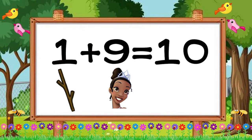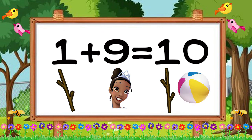Ten. We have number ten. Ten like a stick and a wall. One is a stick and zero is a ball. That's number ten.